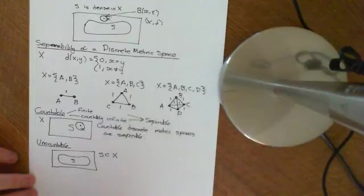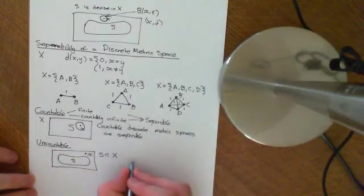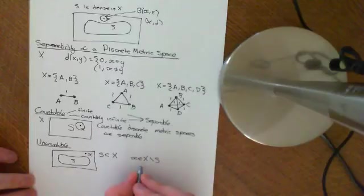Now the problem with that is if it's a proper subset, then there exists an element, little x, which is in big X but is not in S. So it's an element of the complement of S within X.